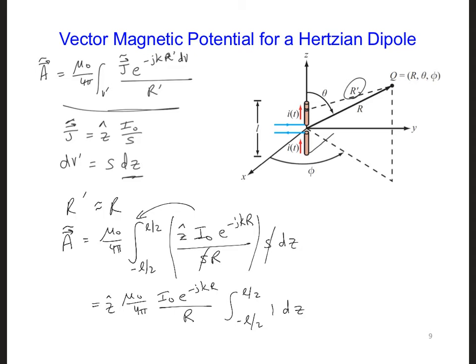So after performing the integral, this is going to just turn into L. Now at this point we can notice that our solution includes a mix of both cartesian, z hat, and spherical coordinate terms, r versus z hat.